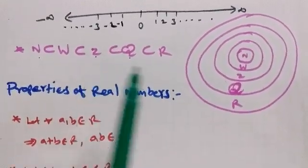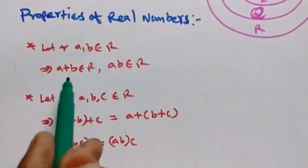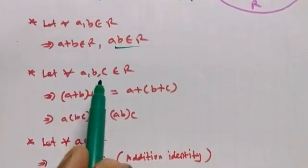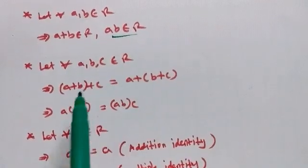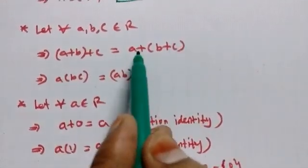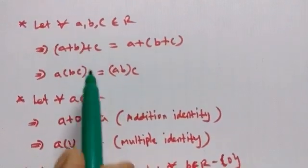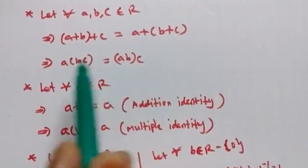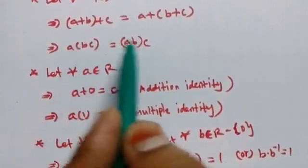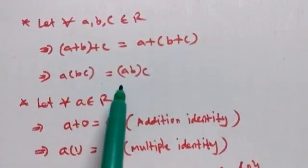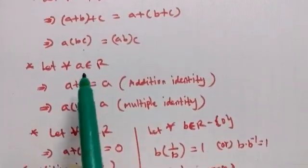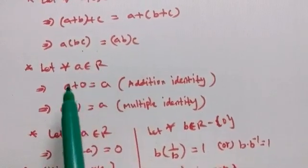Now the properties of real numbers. If we have real numbers A, B, and C, then A plus (B plus C) equals (A plus B) plus C — this is the associative property of addition. You can use brackets in any grouping. This is followed by the additive identity property.